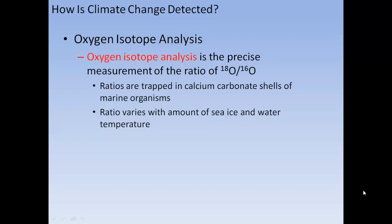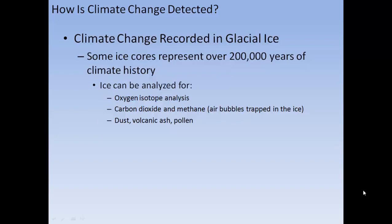Foraminifera are an indicator. Oxygen isotope analysis is a precise measurement of the ratio of oxygen-18 to oxygen-16. Ratios are trapped in calcium carbonate shells in marine organisms. Ratios vary with the amount of sea ice and water temperature. Ice cores can record climate change — some represent over 200,000 years of climate history. Ice can be analyzed for oxygen isotope analysis.